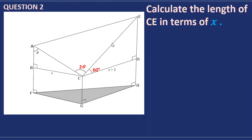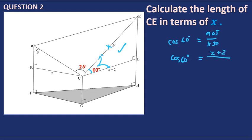In question two, calculate the length of CE in terms of x. We're looking for CE, so we use this triangle. In that triangle we have an angle of 60 degrees with an adjacent side, and we are looking for the hypotenuse. Adjacent over hypotenuse is cosine, so it will be cosine of 60 degrees.